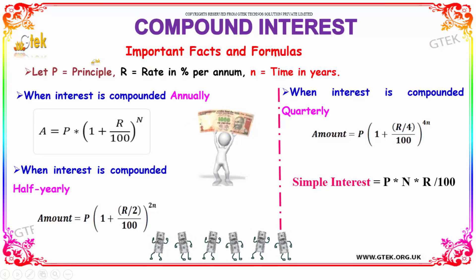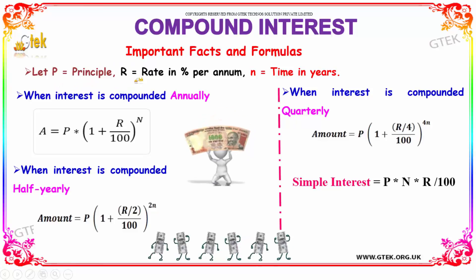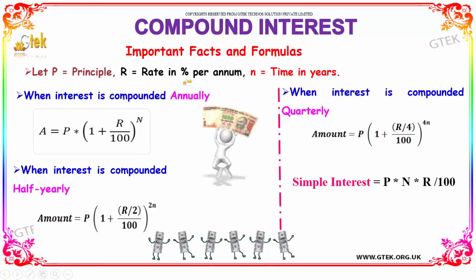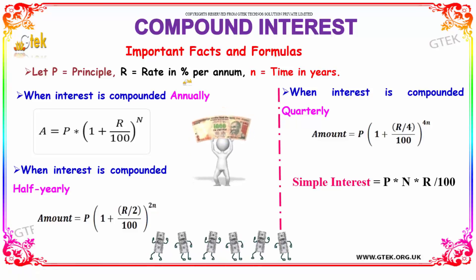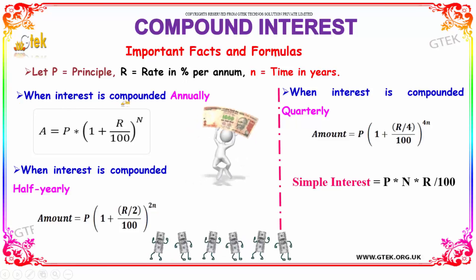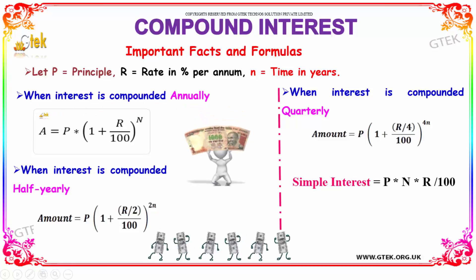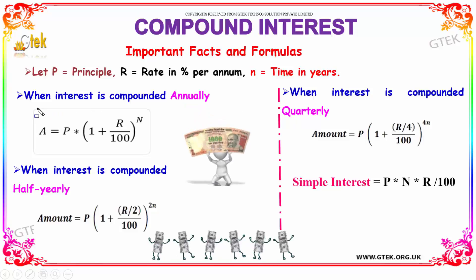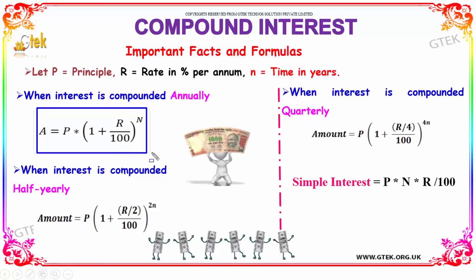Let us see some important facts and formulas. Let p be the principal, r be the rate in percentage per annum and n is the time in years. Then when the interest is compounded annually, the amount A is equal to P into (1 + r/100) whole power n.